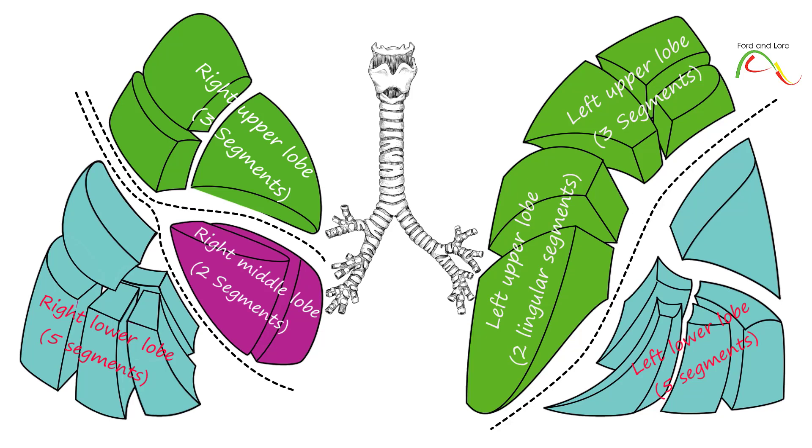The veins, on the other hand, run in connective tissue between the adjacent bronchopulmonary segments.